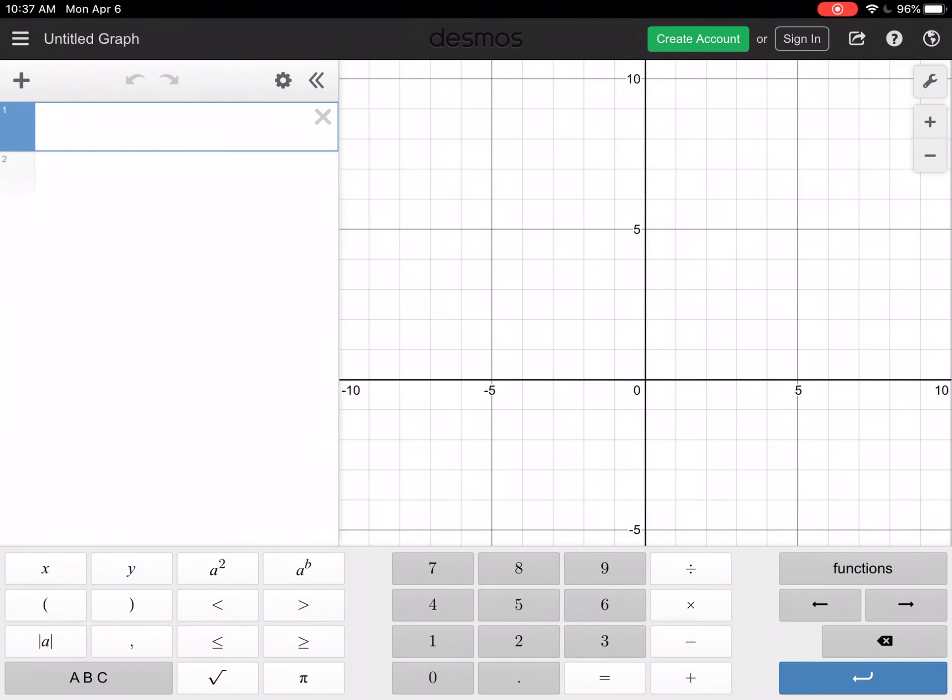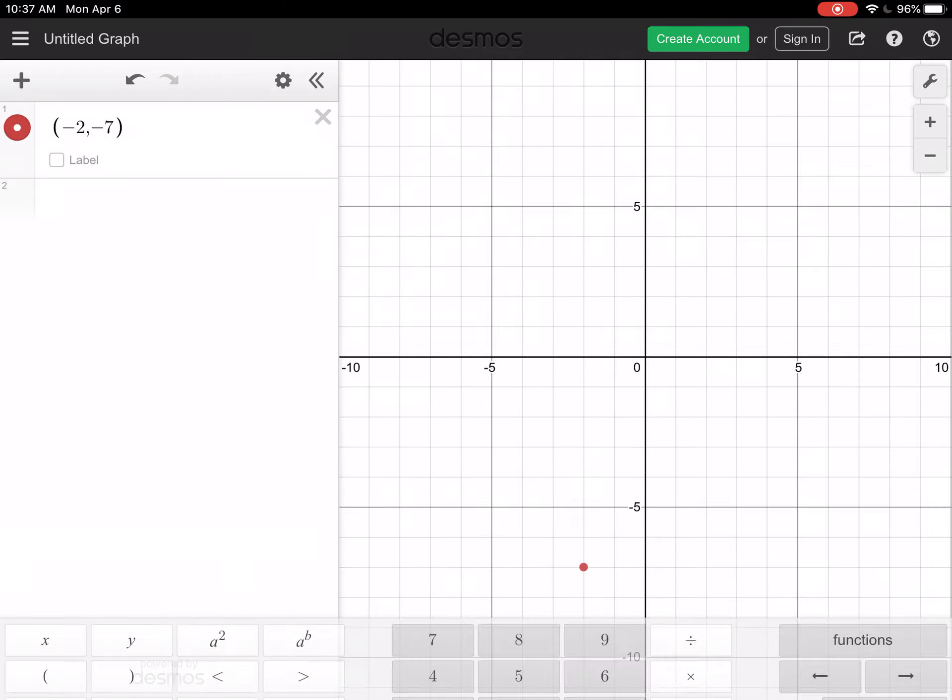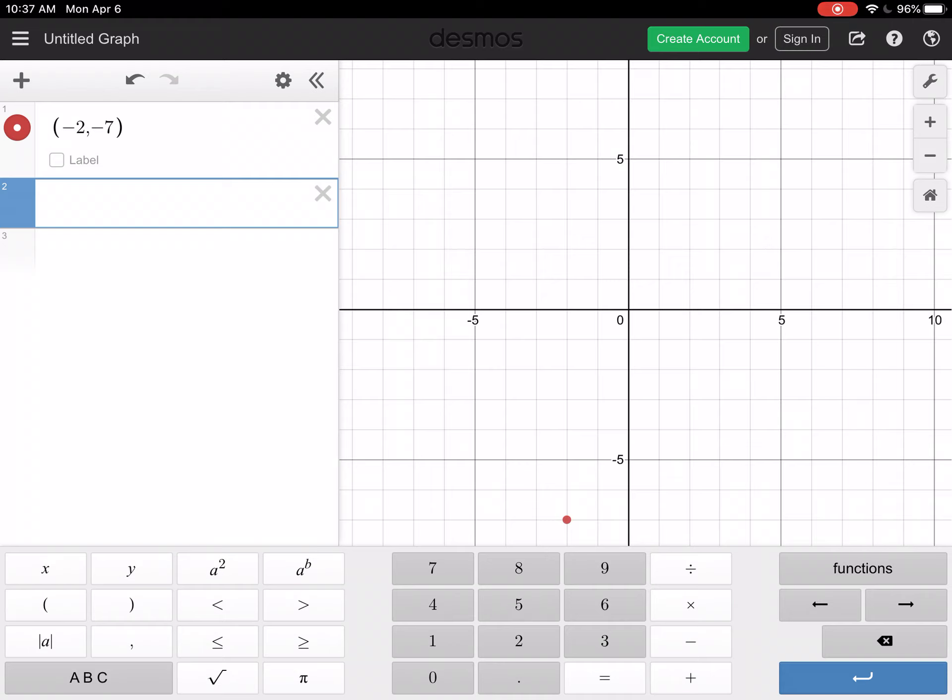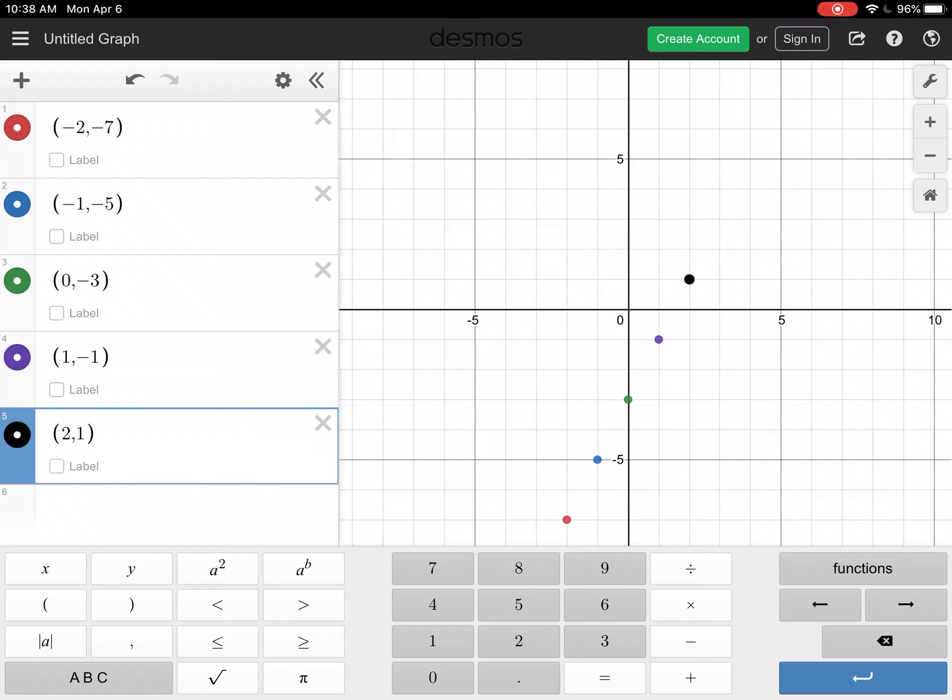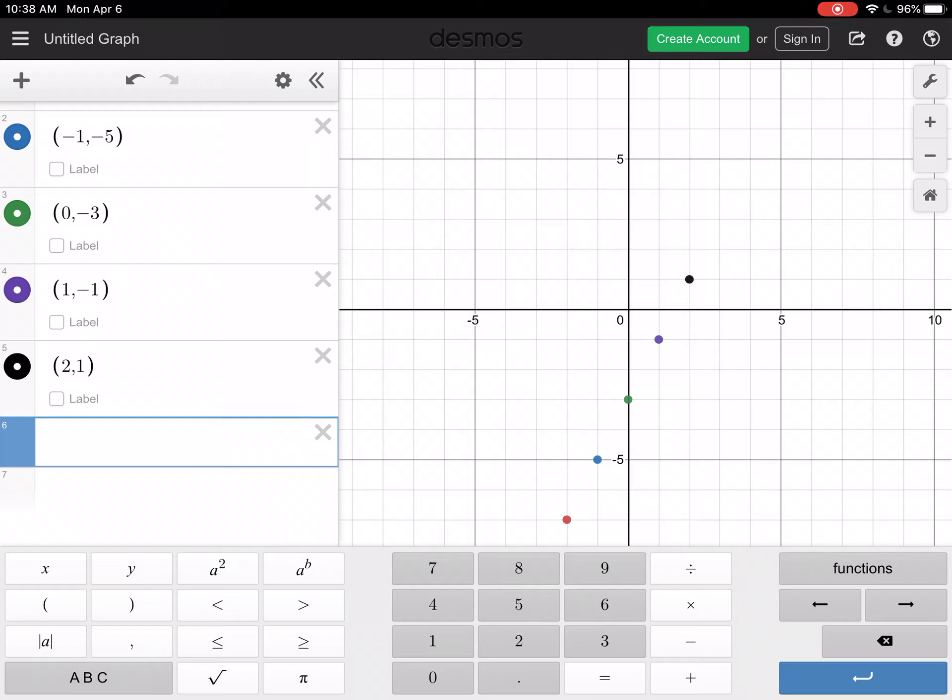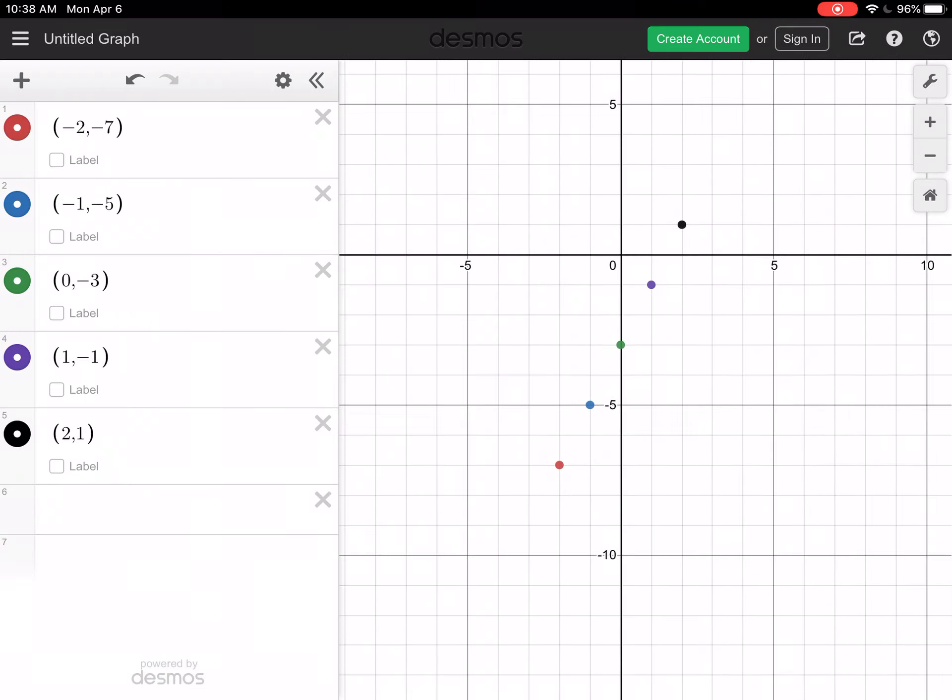So, we have a bunch of points to plot, negative 2, negative 7. So, you can literally put in parenthesis, negative 2, comma, negative 7, close the parenthesis. And, it'll put the point. And, you can keep doing that with the remainder of the points. So, we had negative 1, negative 5. We had 0, negative 3. We had 1, negative 1. And, we had 2, 1. Now, I'm doing this without my keyboard attached. You can absolutely use your keyboard to type this stuff in. What we have here are those five ordered pairs. Can you look at this and tell me that they make a line? I think you can.